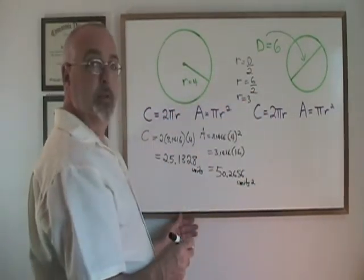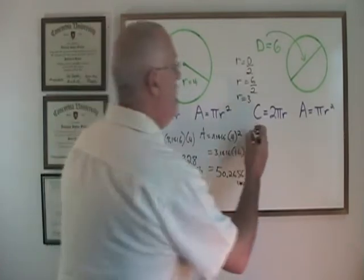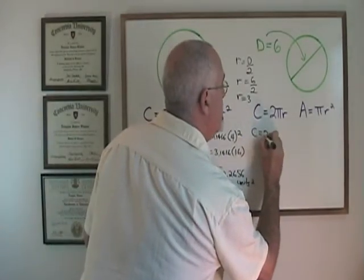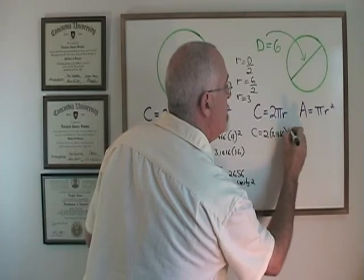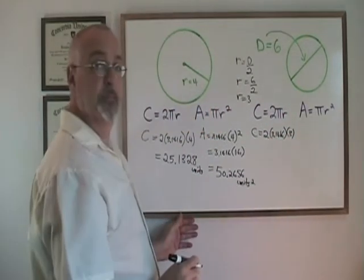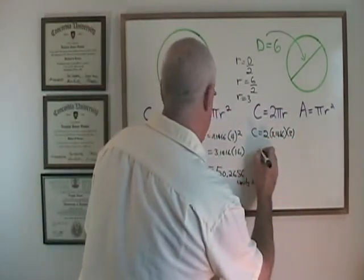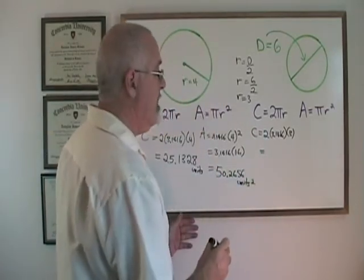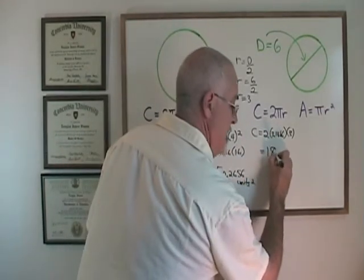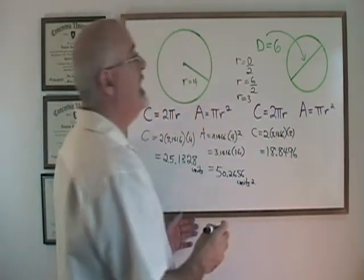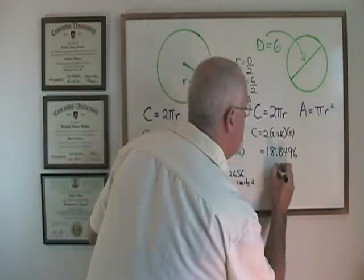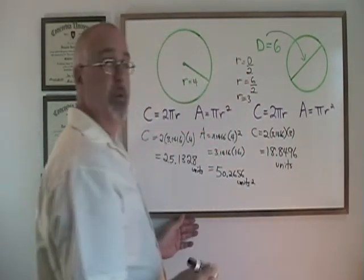In the circumference formula, using 3.1416 for pi, I get c equals 2 times 3.1416 times the radius of 3. This gives me a circumference of 18.8496. And again, no units are given, so I will use the word units as my unit.